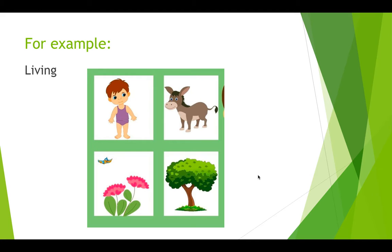Here are examples of living things. Like I showed you yesterday, we have a kid and he's a living thing. And then we have a donkey, which represents an animal. And an animal is a living thing because they both move, they both grow, they both eat and drink, they can reproduce, and they both need air. That's what makes these both living things.